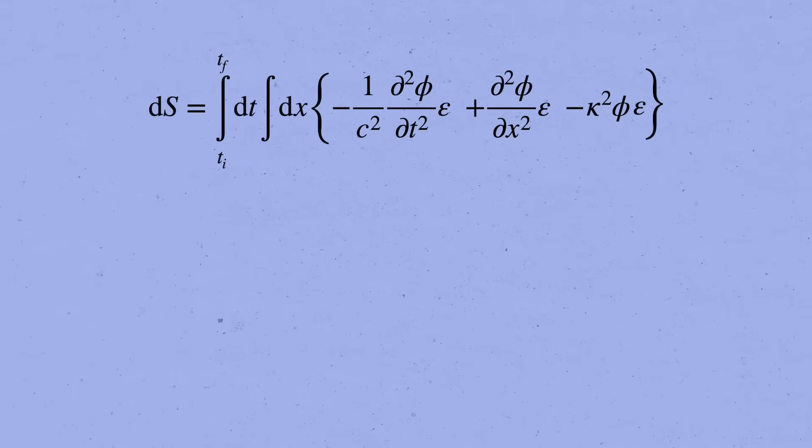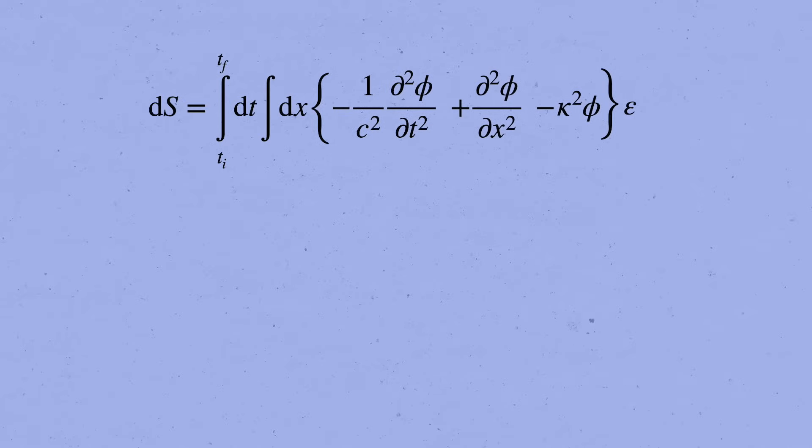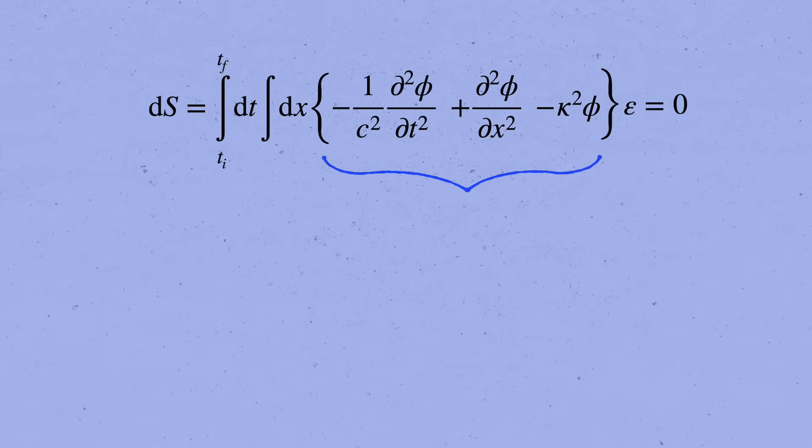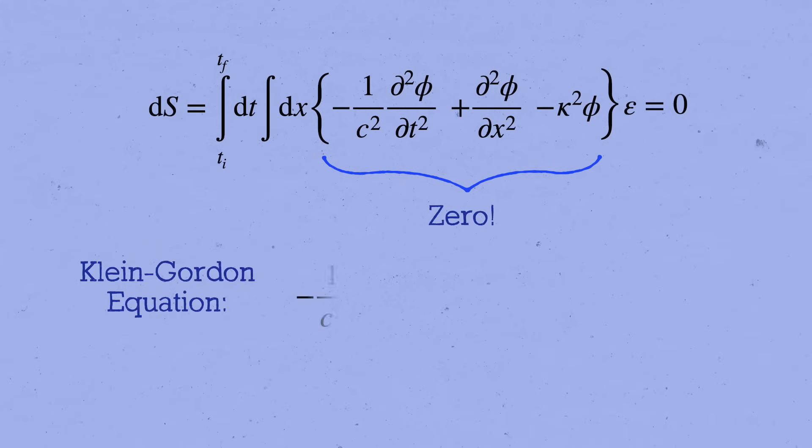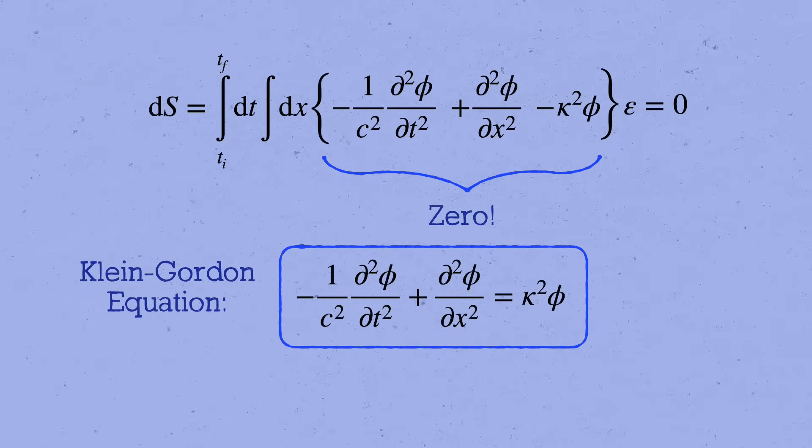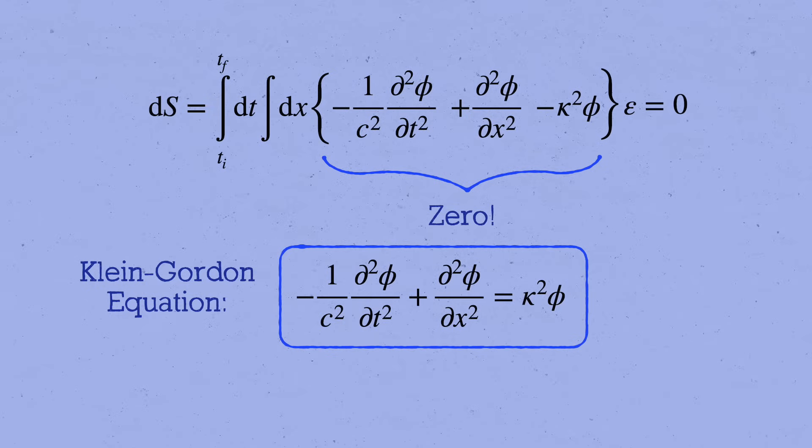Therefore, the leading change in the action when we make a small variation of the field configuration looks like this. As usual, integrating by parts has enabled us to pull out the common factor of epsilon. And now, if we want this to vanish for any suitable variation epsilon, we conclude that in order for a field configuration phi to extremize the action, it has to satisfy minus 1 over c squared times the second derivative of phi with respect to time plus the second derivative of phi with respect to space equals kappa squared times phi. This is the Klein-Gordon equation. It's quite famous. It's a generalization of the wave equation, since if you set kappa equal to zero, it becomes the equation of a wave traveling at the speed of light.